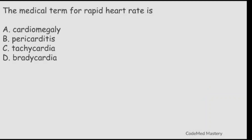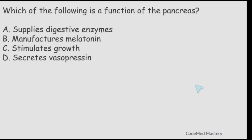Next question: the medical term for rapid heart rate is? Option A: cardiomegaly. Option B: pericarditis. Option C: tachycardia. Option D: bradycardia. The right answer is option C, tachycardia. The term 'tachy' means rapid.